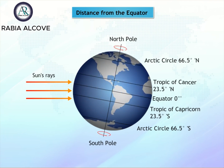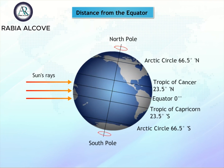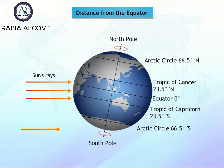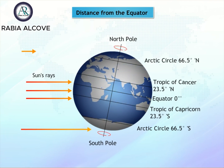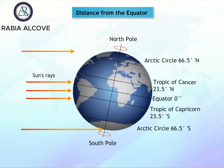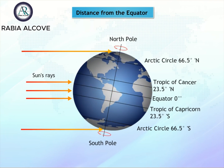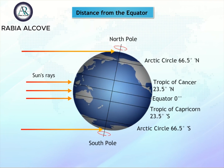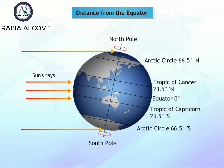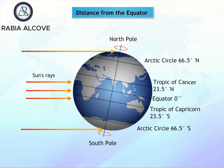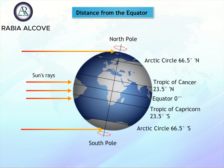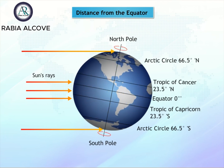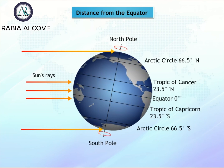Sunlight travels a longer distance through the atmosphere to reach the polar regions. This happens because the sun is at a lower angle in the sky. Due to this, a lot of energy is lost and the temperatures on the poles are cooler.